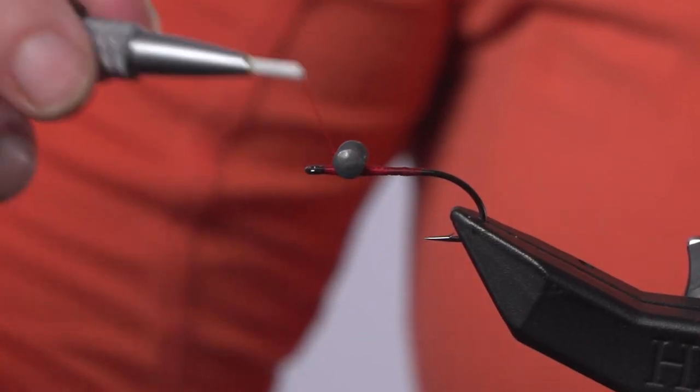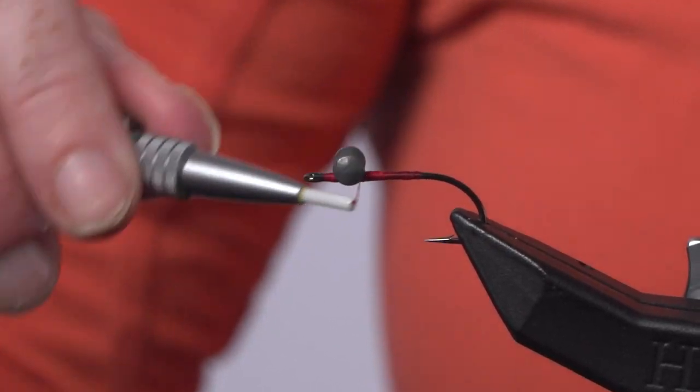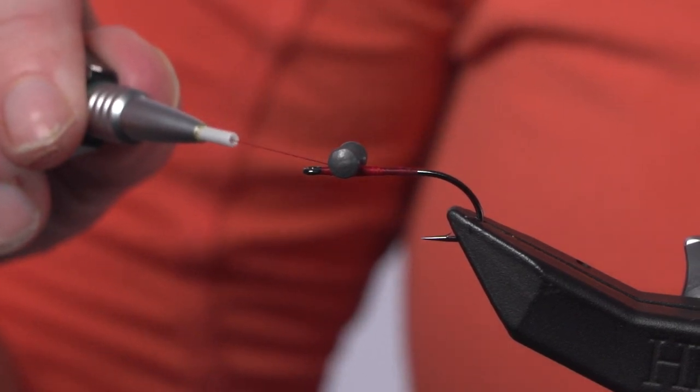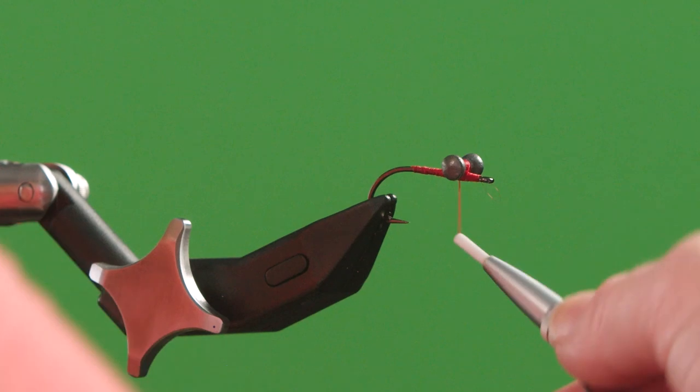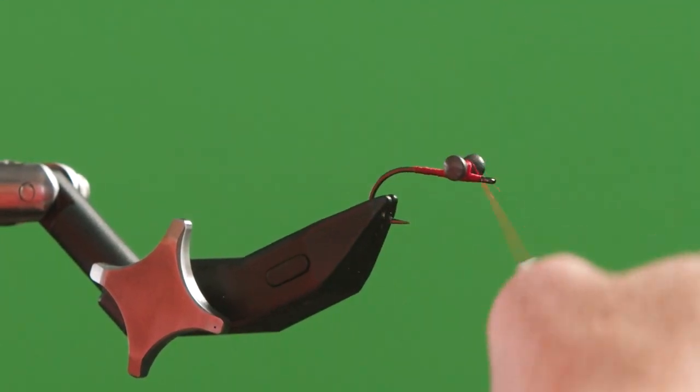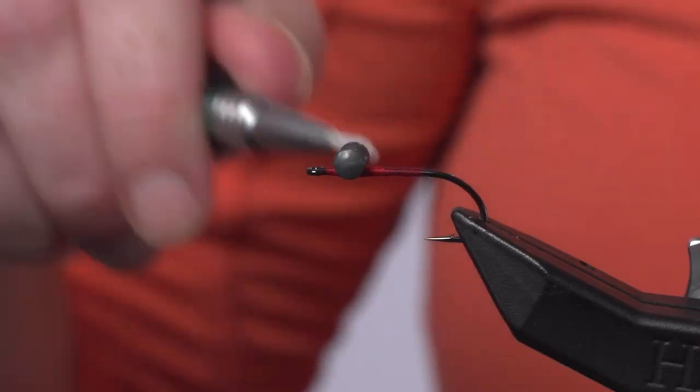Then what you're going to do is wrap underneath both sides like that and tighten without breaking your thread. Then alternate back to going diagonally over the middle and then underneath again a few times.